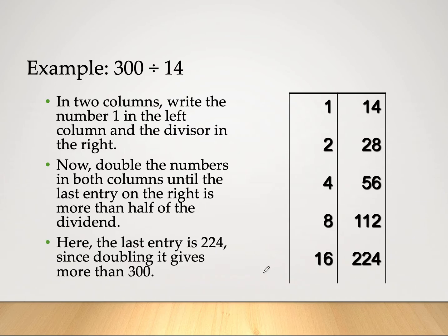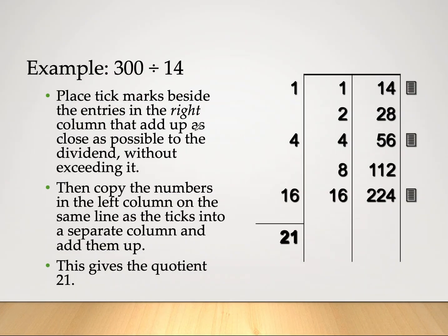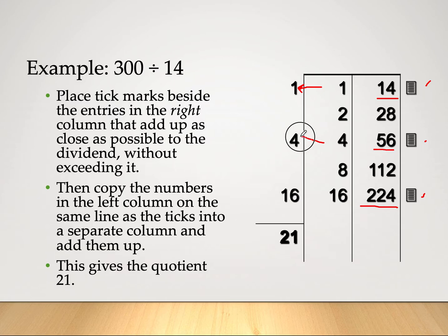We place tick marks beside entries in the right column that add up as close as possible to the dividend without exceeding it. Adding 224 and 112 would exceed 300, so we choose 224 plus 56, which gives 280. We cannot add 28 because that gives 308, but adding 14 gives 296. So we tick the rows for 224, 56, and 14. We then copy the corresponding left-column values — 16, 4, and 1 — and add them up to get 21. That is our quotient.